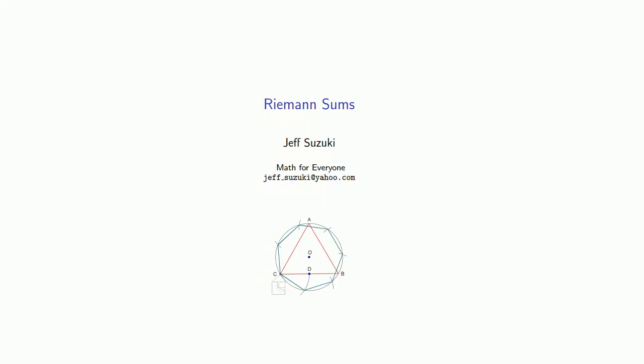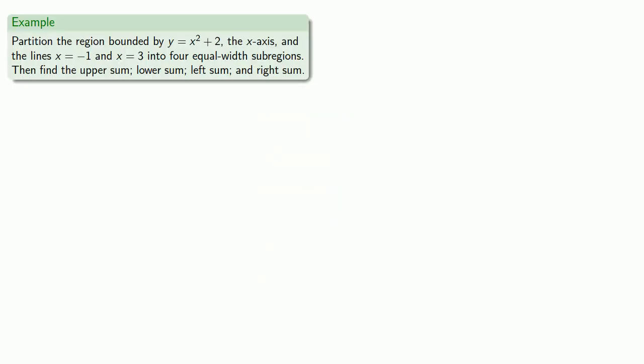So let's find the areas of some regions. Here's a bounded region, and suppose we want to partition it into four equal-width sub-regions, and then use these sub-regions to approximate the area by finding the upper sum, the lower sum, the left sum, and the right sum.